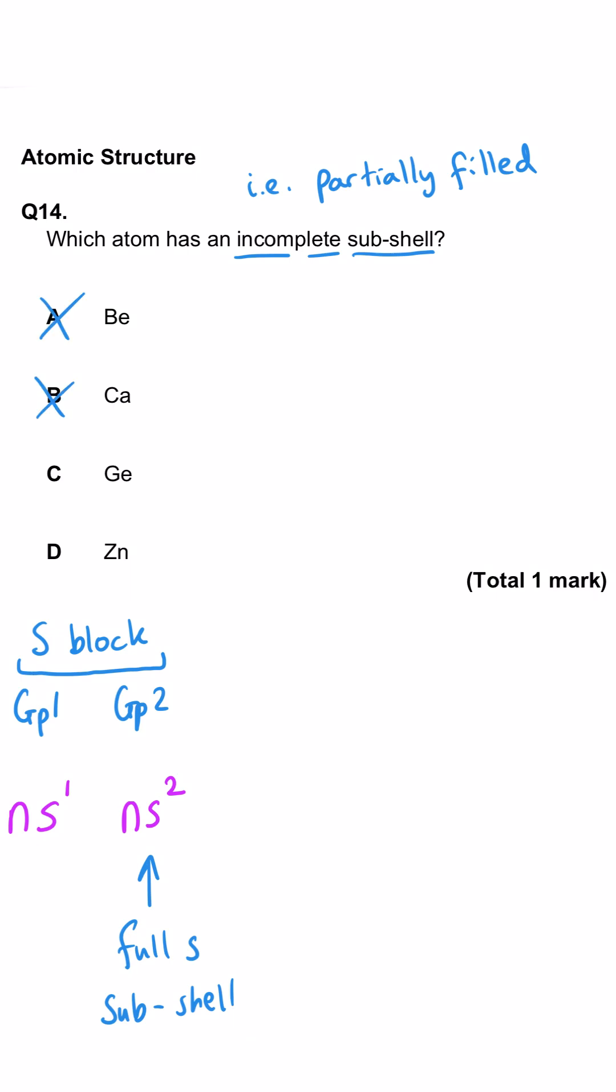Anything in group 2 will only have a complete S subshell in its outer energy level. So we can instantly rule out beryllium and calcium because they are found in group 2. And anything in group 0 will have a filled P subshell as its outer energy level.